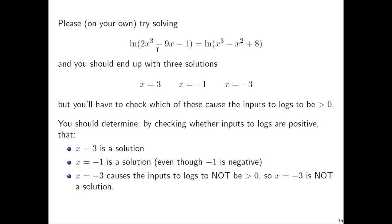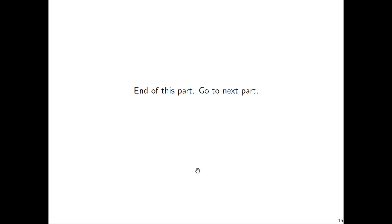Please try this on your own: solve ln(2x³ − 9x − 1) = ln(x³ − x² + 8). Remember, ln is just log base e, so set the inputs equal. You'll need to factor — when you have four terms, try factoring by grouping. You should get three candidate solutions: x = 3, x = −1, and x = −3. After checking that each causes the log inputs to be bigger than 0, x = 3 and x = −1 are valid solutions, but x = −3 is not.